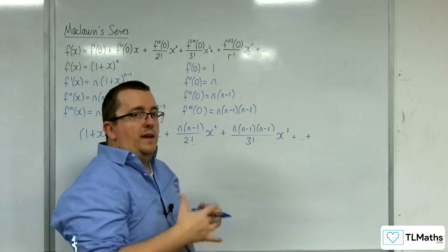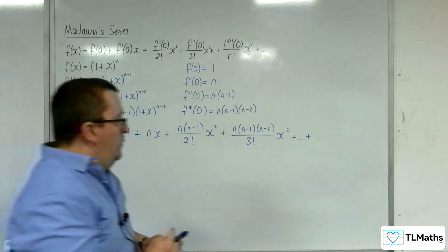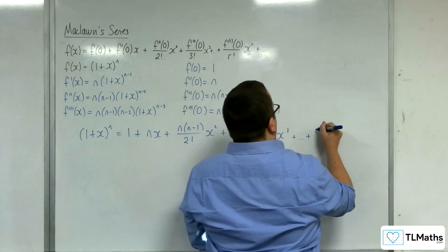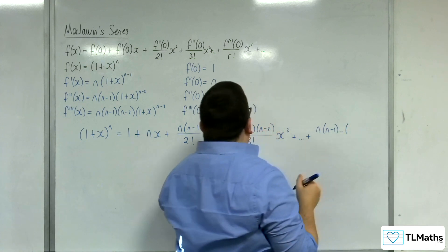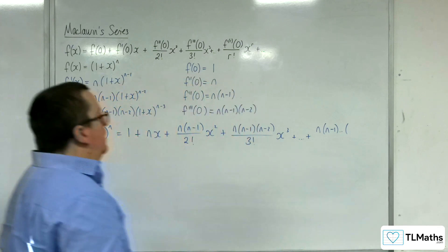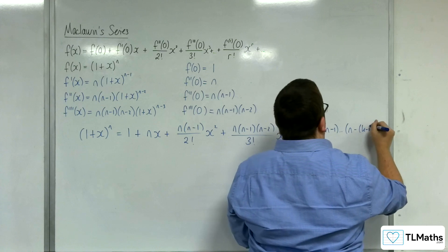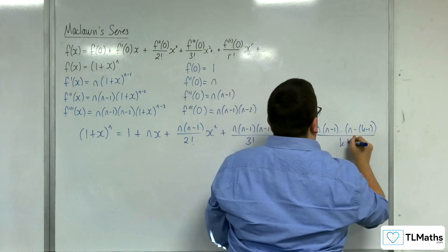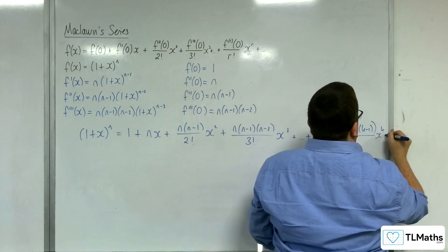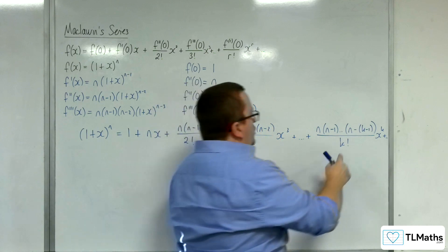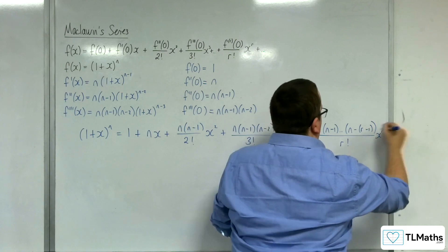And so you can get that general term, where we would have n times n minus 1 dot dot dot and then n take away k minus 1, over k factorial x to the k, for example, plus dot dot dot. I mean, we could use r here if we wanted to, I guess.